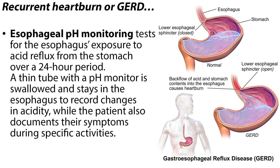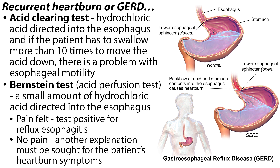To evaluate recurrent heartburn, esophageal pH monitoring tests for the esophagus's exposure to acid reflux from the stomach over a 24-hour period. A thin tube with a pH monitor is swallowed and stays in the esophagus to record changes in acidity, while the patient documents their symptoms during specific activities. In conjunction with manometry and pH monitoring, the doctor may also perform an acid clearing test and a Bernstein test. In the acid clearing test, hydrochloric acid is directed into the esophagus, and if the patient has to swallow more than 10 times to move the acid down, there is a problem with esophageal motility. In the Bernstein test, a small amount of hydrochloric acid is directed into the esophagus, and if the patient feels pain, the test is positive for reflux esophagitis.